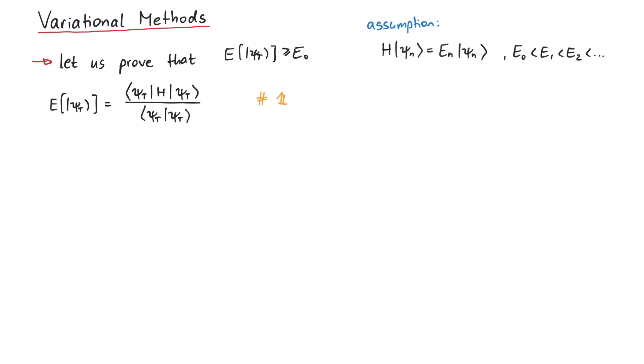We start by inserting a completeness relation right next to the Hamiltonian. This is possible since the psi n constitute a complete basis. We can then let the Hamiltonian act on the wave function psi n, which yields En psi n.